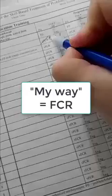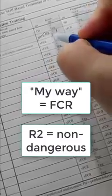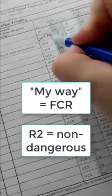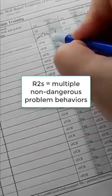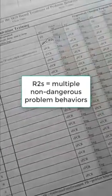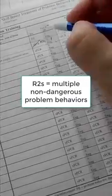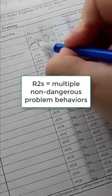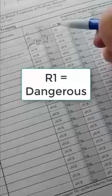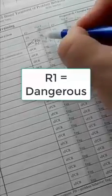And maybe they engage in some non-dangerous problem behavior during the EO. Maybe they're yelling several times. And maybe making fists or making some other R2 behaviors. And maybe they do engage, because this is your first trial, in a more dangerous, maybe a headbang.